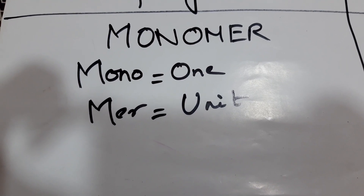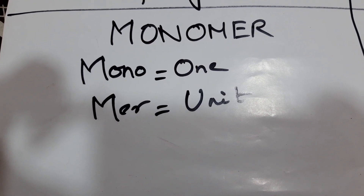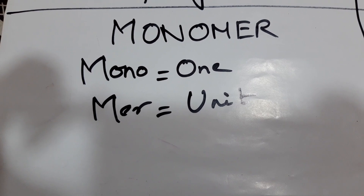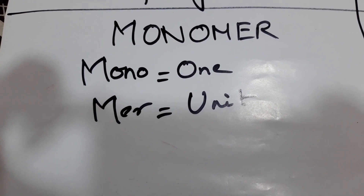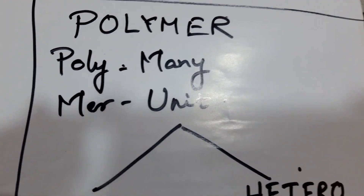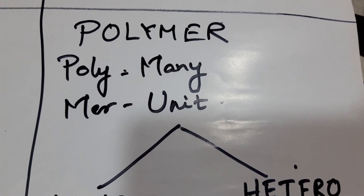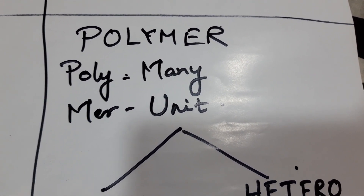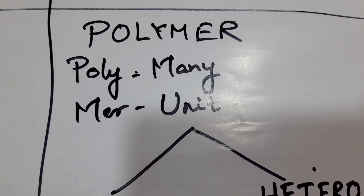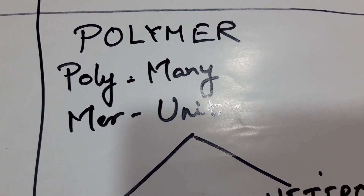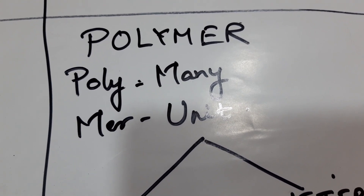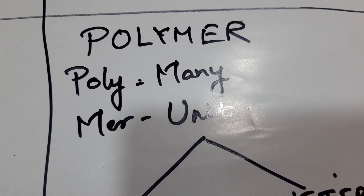Now we will be learning about the concept of monomers and polymers. What do you mean by monomer? Mono means one and MER means unit, so it means one unit. What is polymer? Poly means many and MER means unit, so polymer means many units. A polymer is a long molecule which is made from monomers joined together.